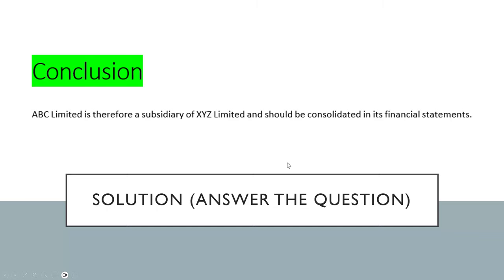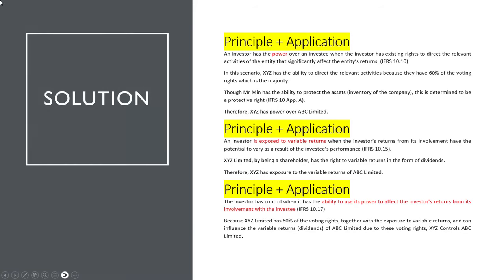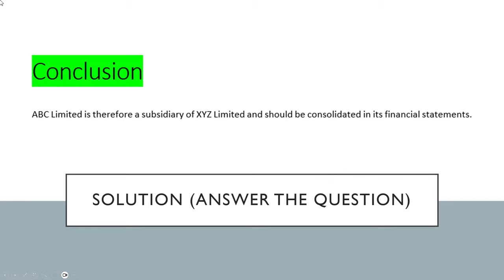Then add your final conclusion: ABC Limited is controlled by XYZ Limited and is therefore a subsidiary of XYZ Limited and should be consolidated in its financial statements. A lot of people have the principle and application, but no one actually answers the actual question by providing their final conclusion.